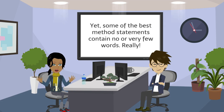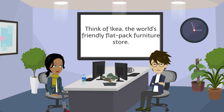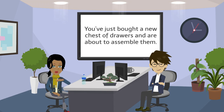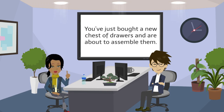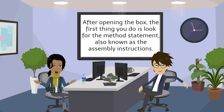Some of the best method statements contain no or very few words. Really — think of IKEA, the world's friendly flat pack furniture store. You've just bought a new chest of drawers and are about to assemble them. After opening the box, the first thing you do is look for the method statement, also known as the assembly instructions.